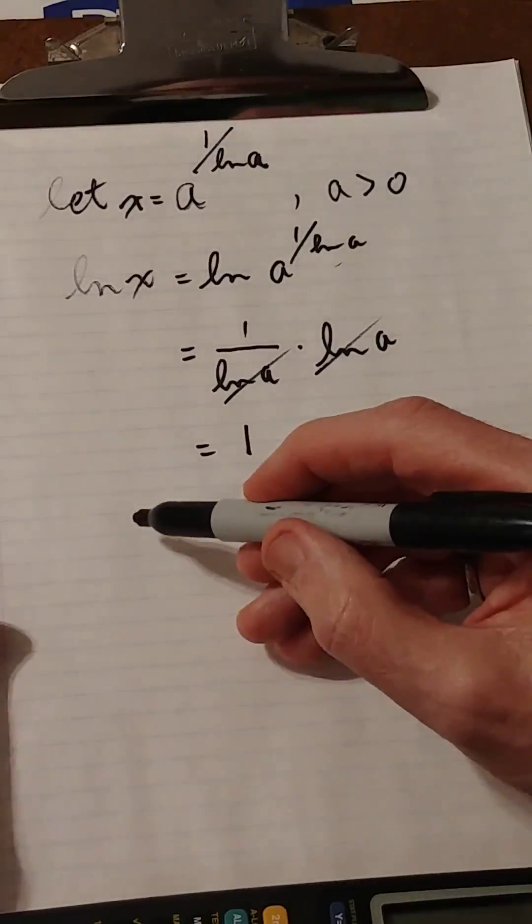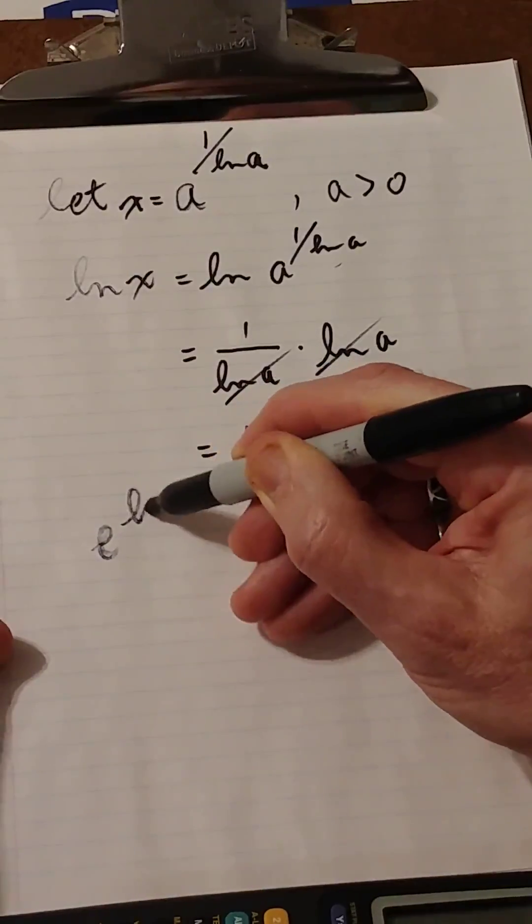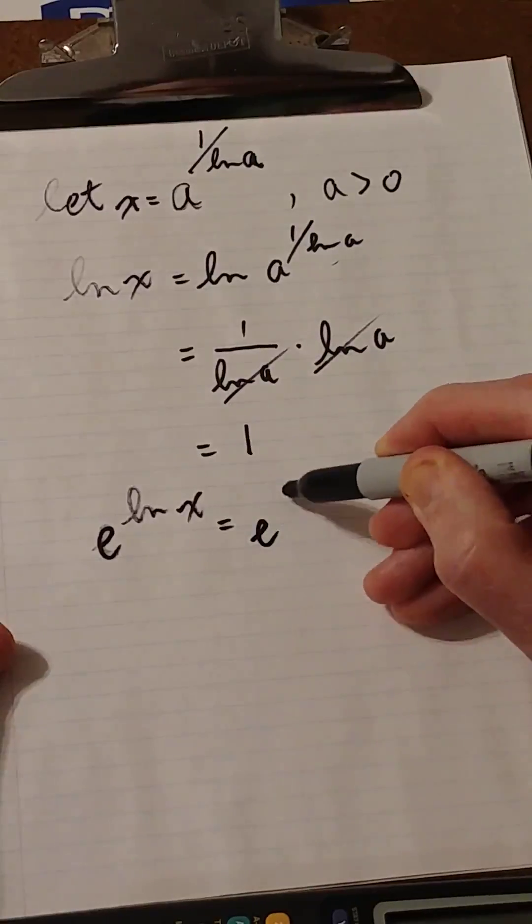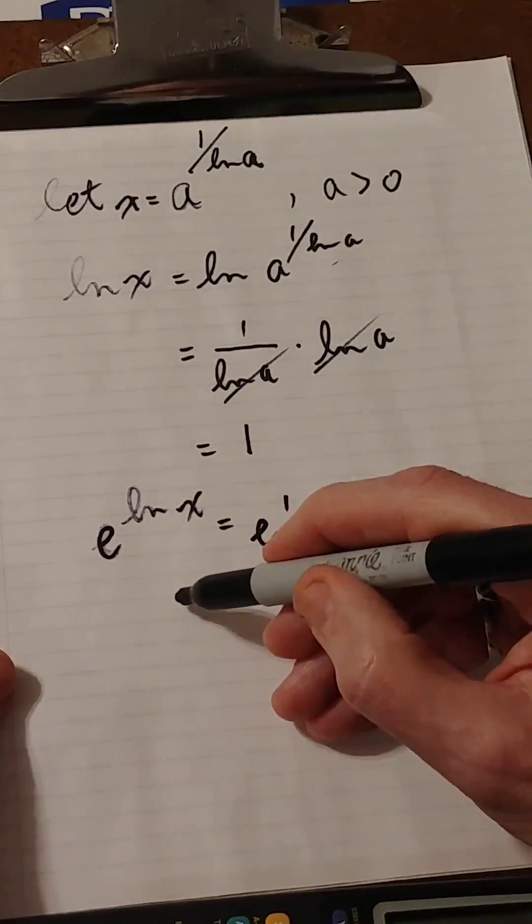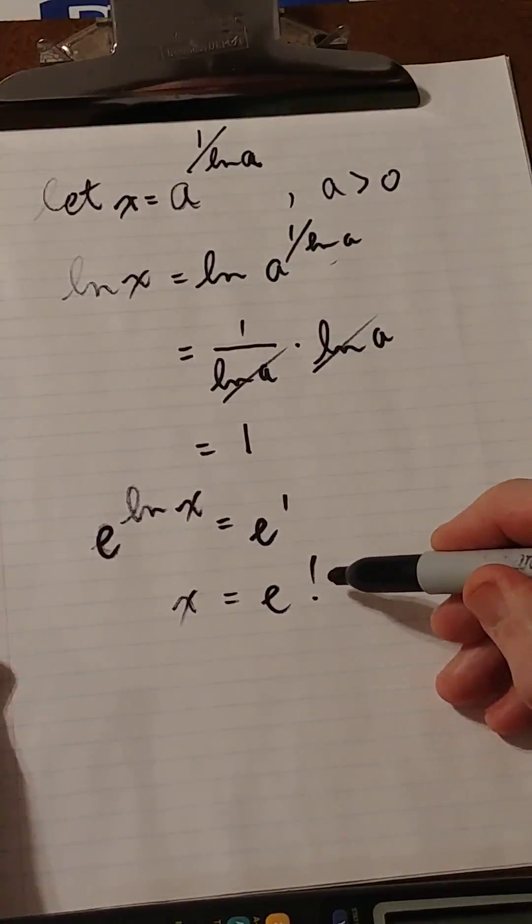Now to calculate x, we raise e to both sides. So e to the ln of x equals e to the 1, or x equals e. Amazing. Not e factorial, just e exclamation mark.